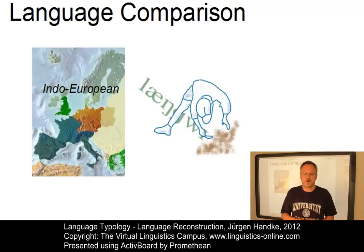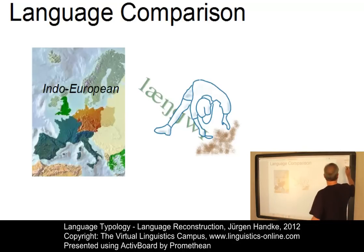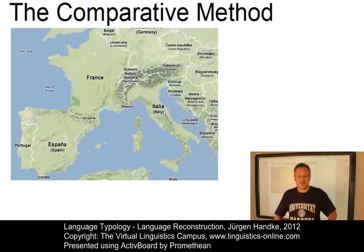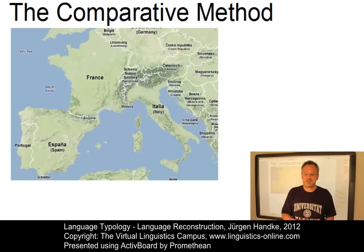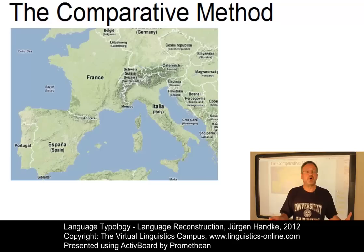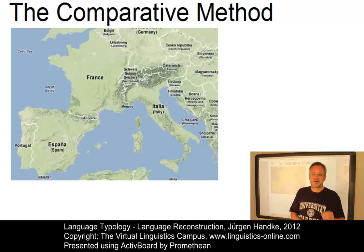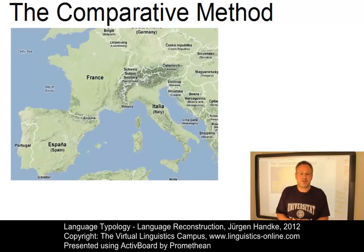The standard way of reconstructing such ancestor languages is referred to as the comparative method. The comparative method is a way of systematically comparing a series of languages in order to show a historical relationship between them. Scholars begin by identifying a set of formal similarities and differences between the languages, thus trying to reconstruct an earlier stage from which all forms could have derived. Let us look at the phrase 'the book' in the Romance languages to illustrate the comparative method.